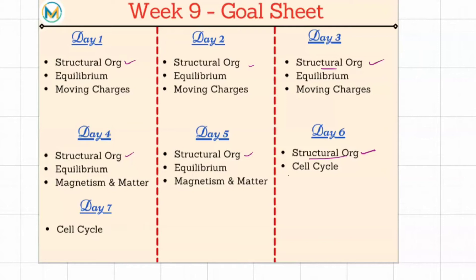Cell cycle we are allotting the sixth and the seventh day. The last two days are for cell cycle. Equilibrium chapter is allotted for all five days and the sixth day. There is no chem on the seventh day.